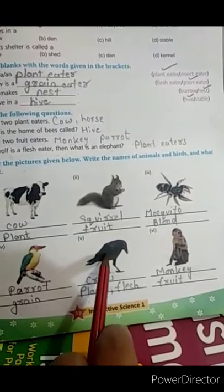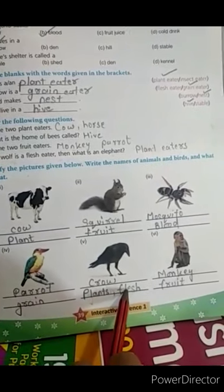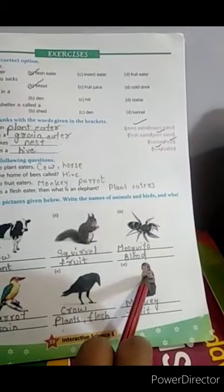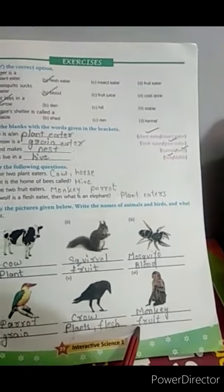This is a crow, and this is a plant and flesh eater. This is a monkey, and this is a fruit eater.